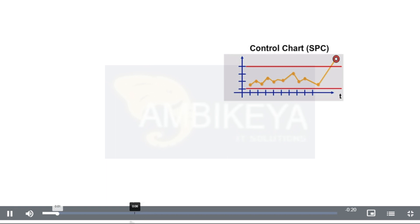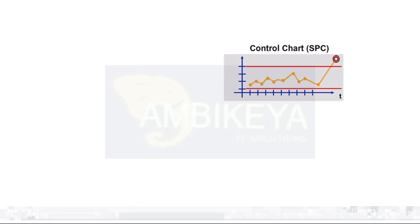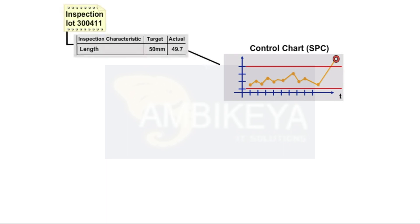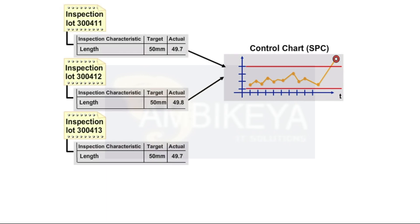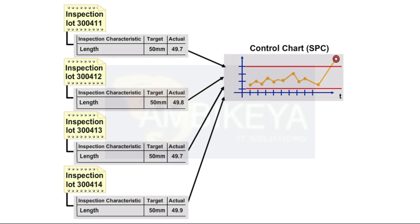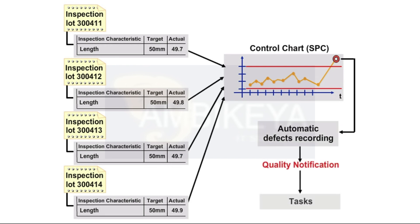In Quality Control, Control Charts play an integral part in Statistical Process Control, or SPC. These charts allow quality control to monitor the current production process. If the action limits are exceeded, the system automatically records predefined defects, and actions for quality notification can be triggered.